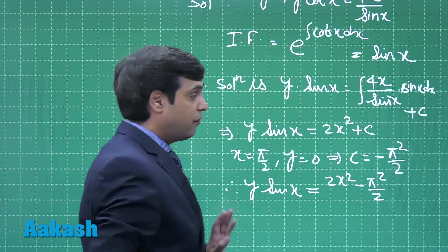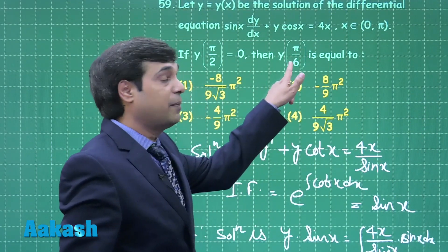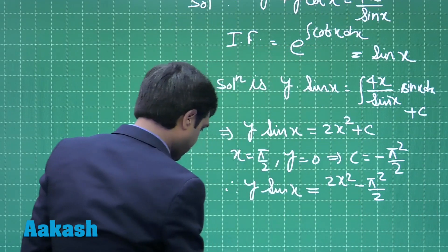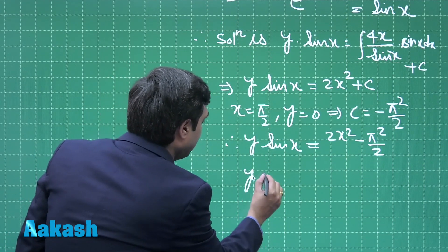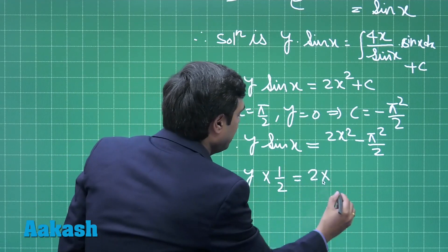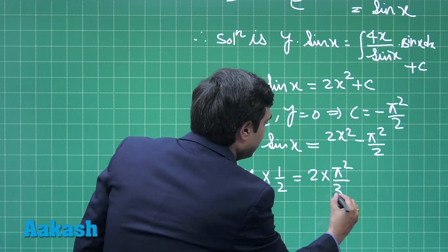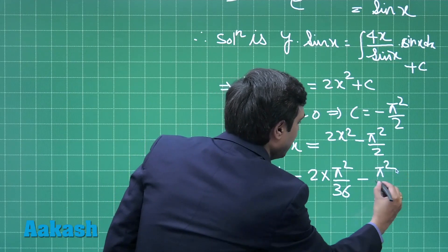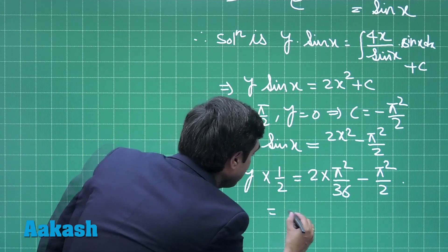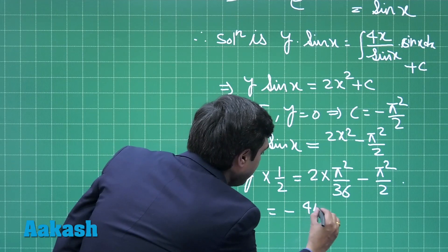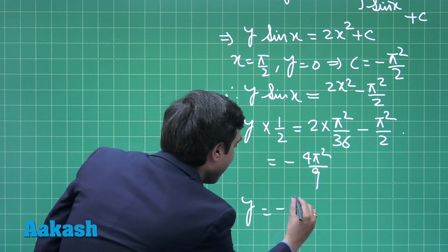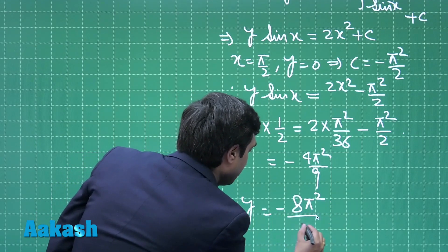We need the value of y when x = π/6. Substituting x = π/6 into the equation: y·(1/2) = 2·(π²/36) - π²/2. This gives us y·(1/2) = π²/18 - π²/2 = -4π²/9, therefore y = -8π²/9.